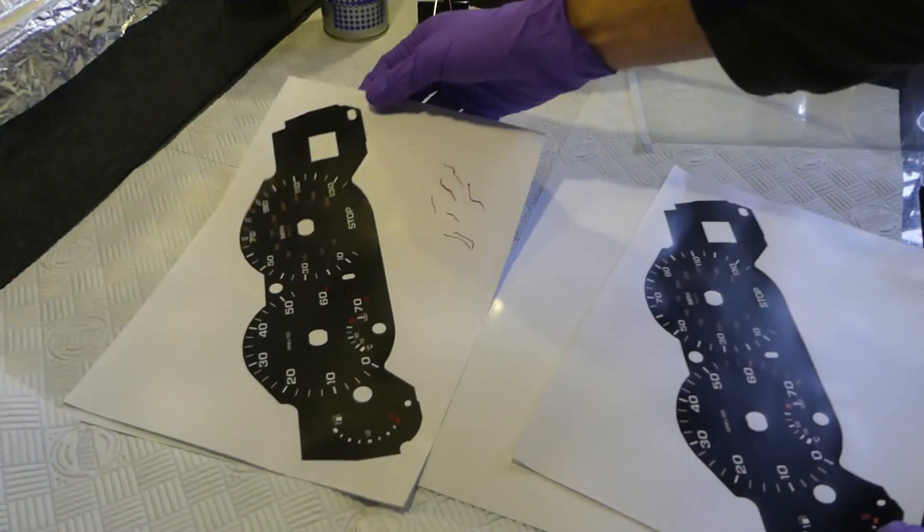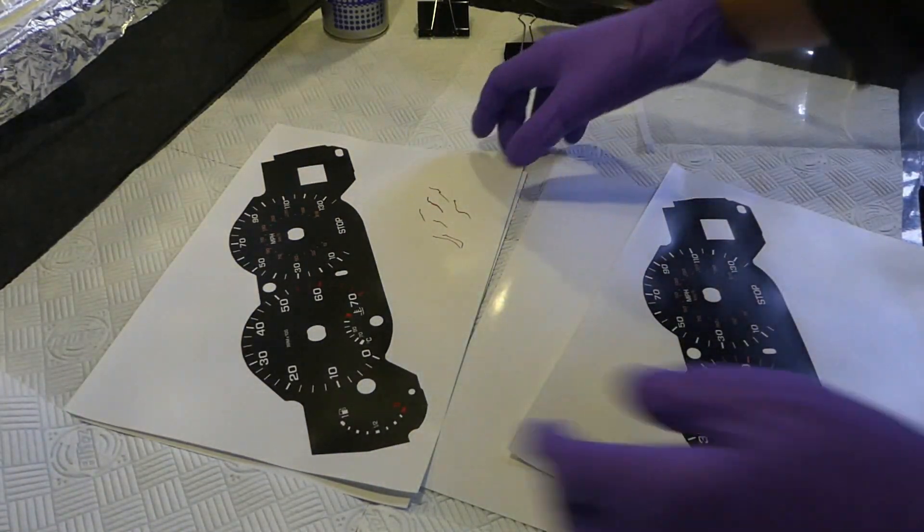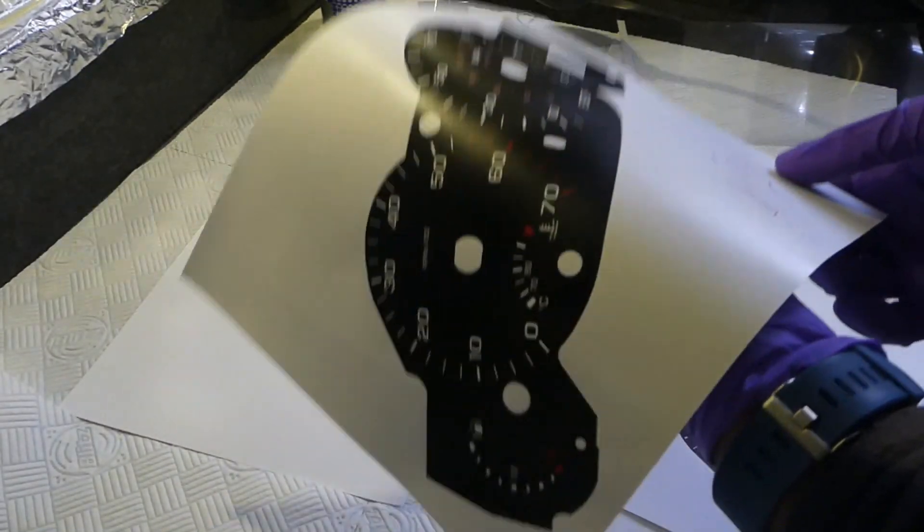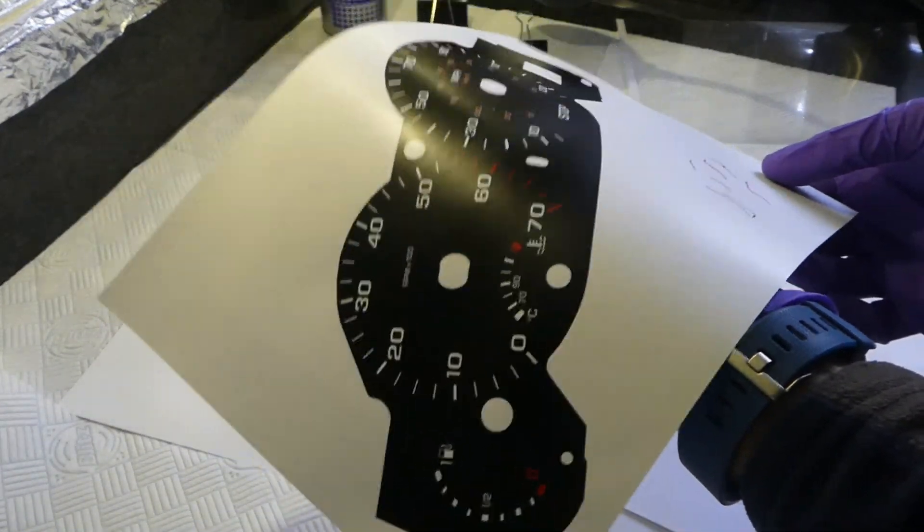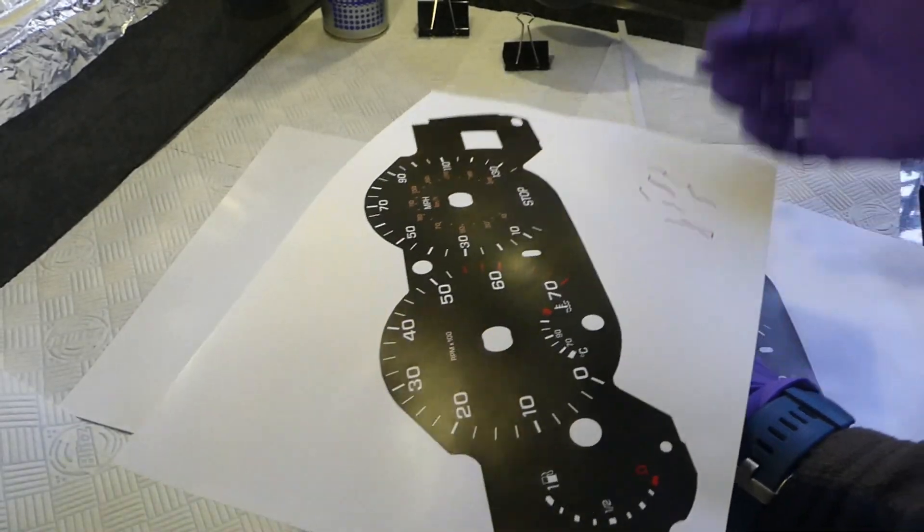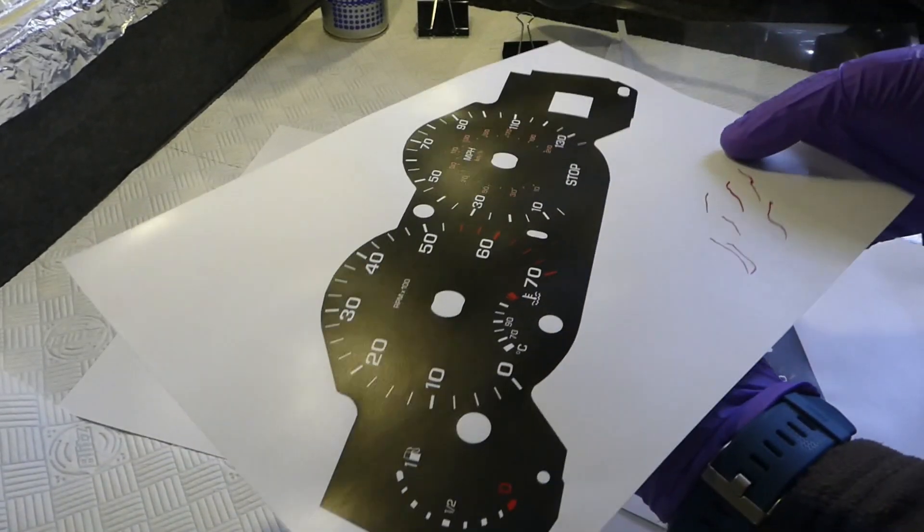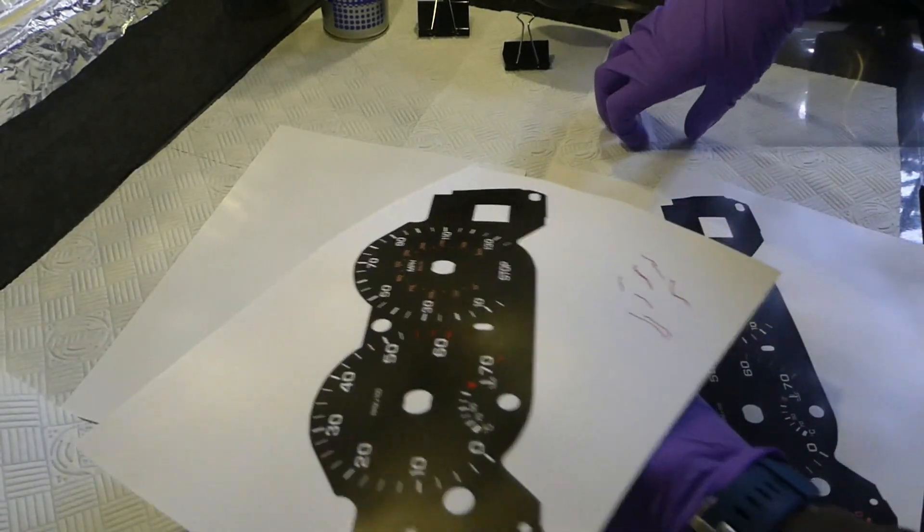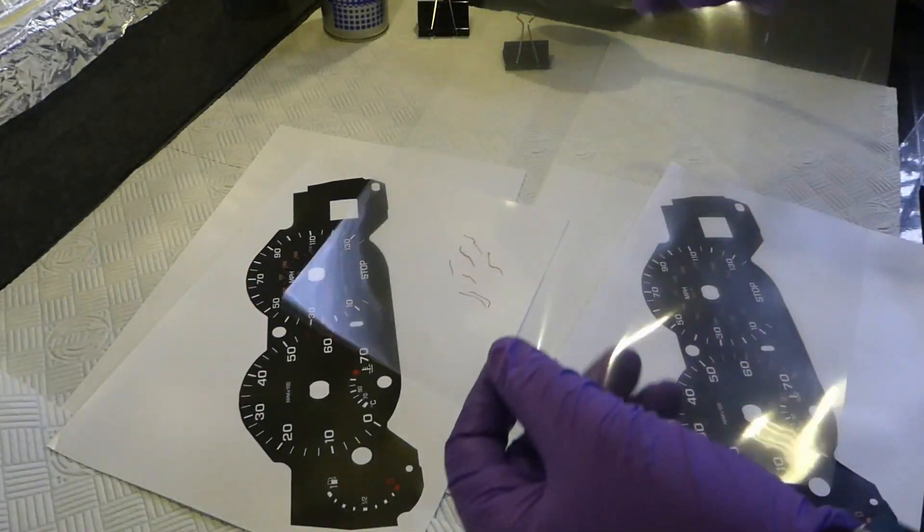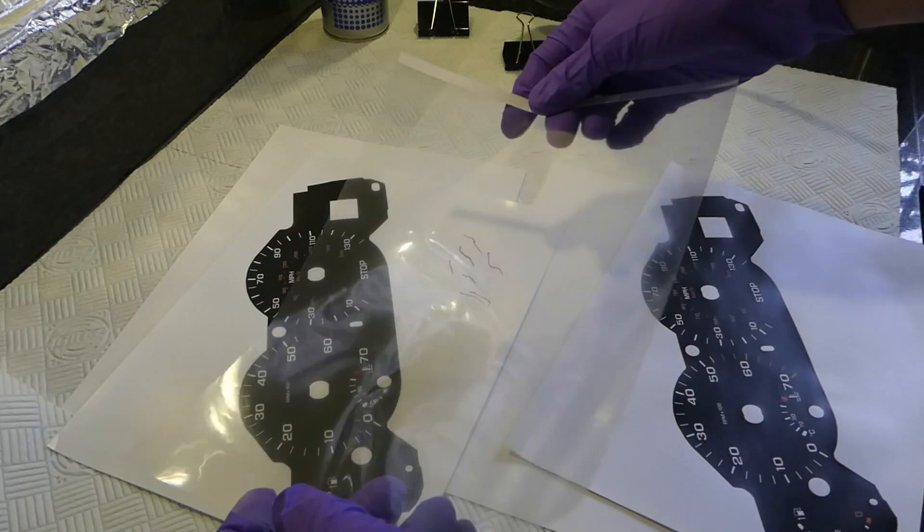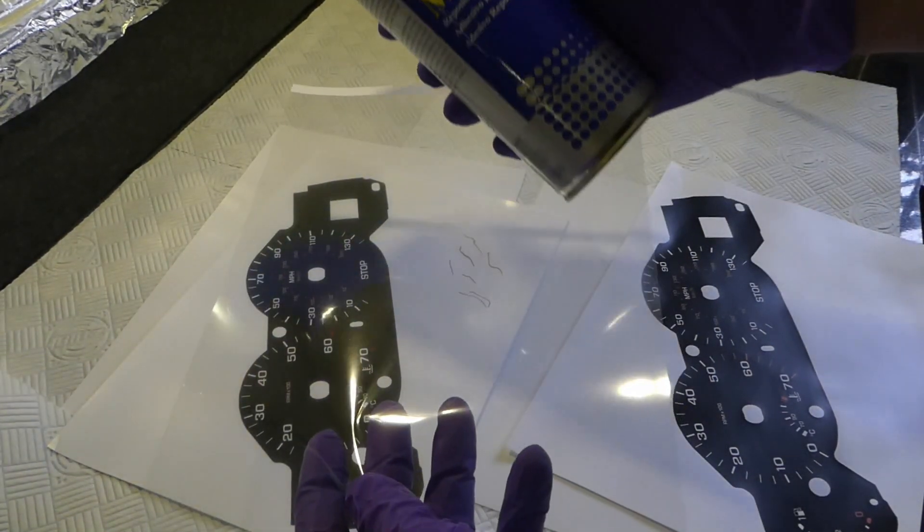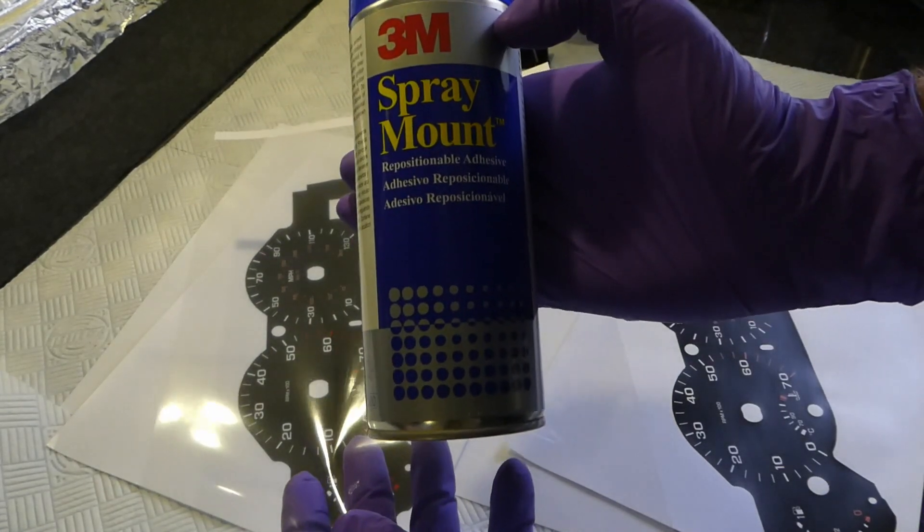So the next process. Because this is fairly flimsy. I mean it doesn't really have a support. So when you put it in you want something to be slightly harder to almost have the same feel as the original one. So I normally put a transparency film underneath. And spray it with the glue.